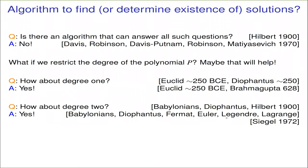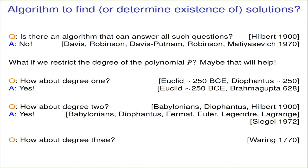All of the case of sums of squares was resolved much earlier. So we're good when p has degree one or degree two — there is an algorithm that can tell us the answer. What about degree three? Waring very famously asked about the degree three case and many higher degree cases back in the 18th century, and as of today we have no idea whether there is an algorithm that can answer this question, even for the case of a single polynomial of degree three, even when it's just three variables.